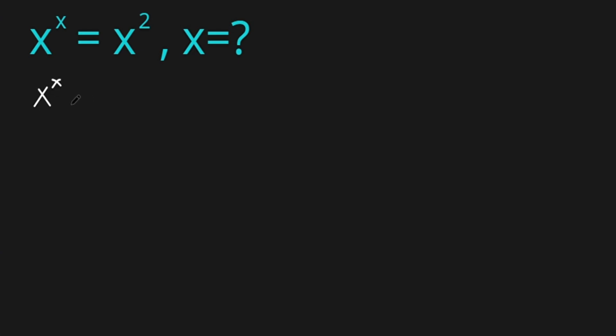Let's start. x to the power of x equals x squared. Now let's multiply both sides by 1 over x squared. x to the power of x times 1 over x squared, and all this equals x squared times 1 over x squared.